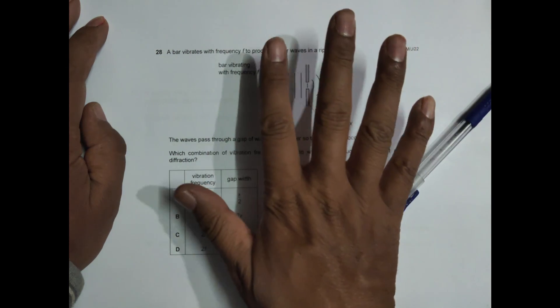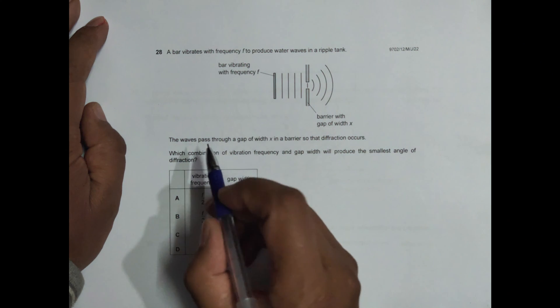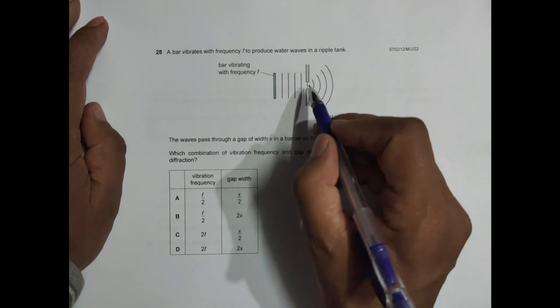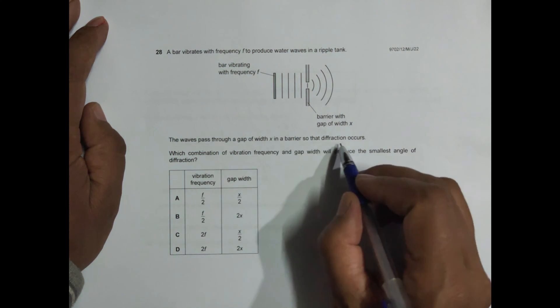The frequency of the ripples will be equal to the vibrating frequency of this bar. The wave passes through a gap of width x. So this gap is x and a barrier, so that diffraction occurs.